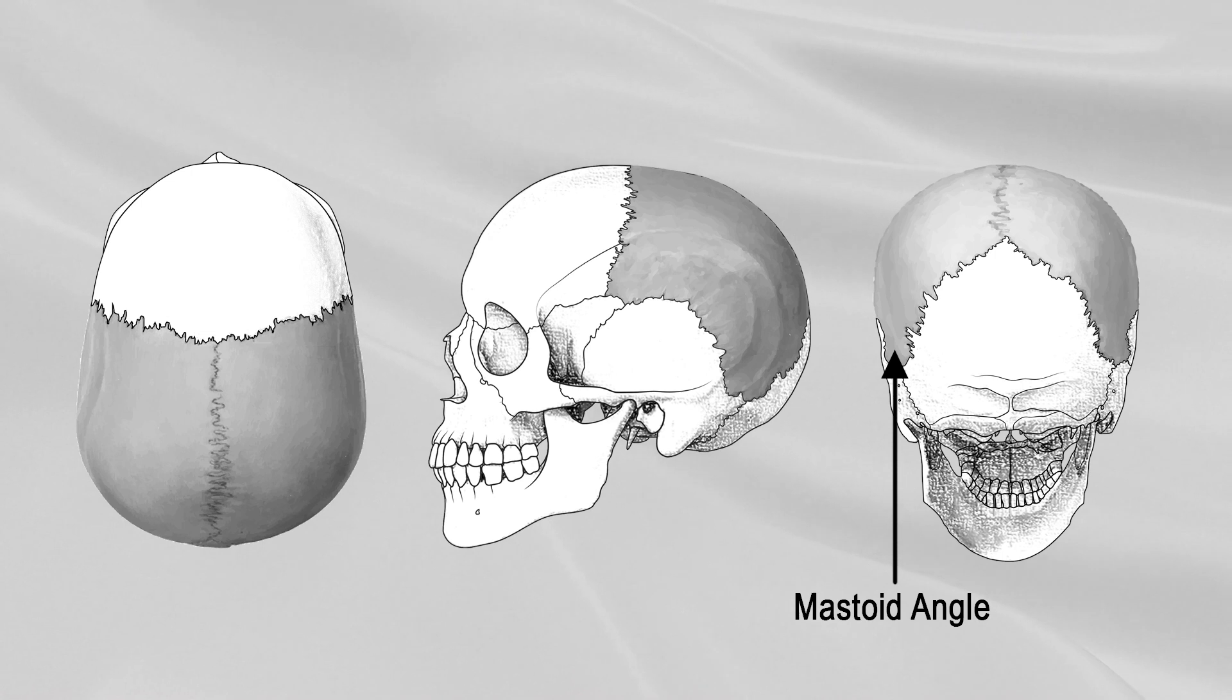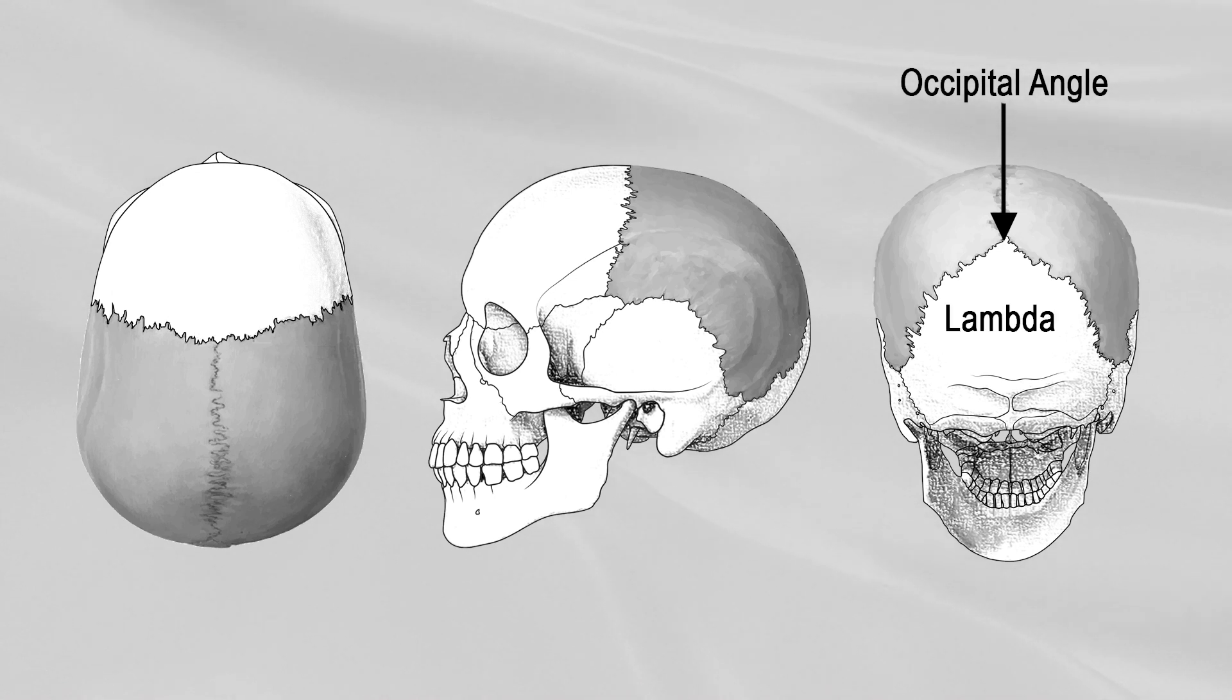The point of meeting of these three bones is named the asterion. The occipital angle corresponds with the point of meeting of the sagittal and lambdoid sutures, termed the lambda. In the fetal skull, it corresponds in position with the posterior fontanelle.